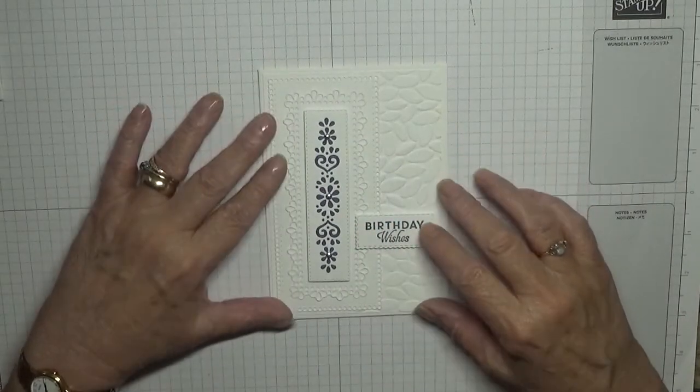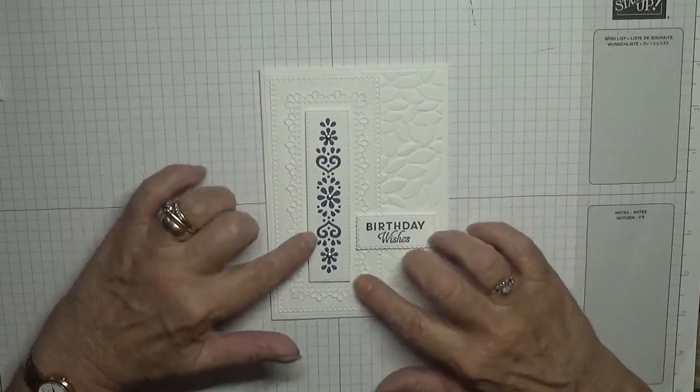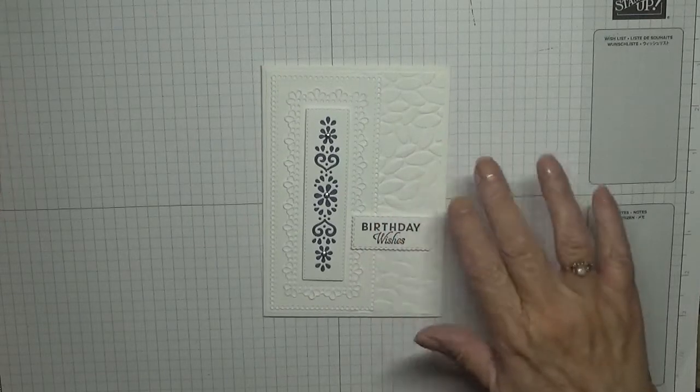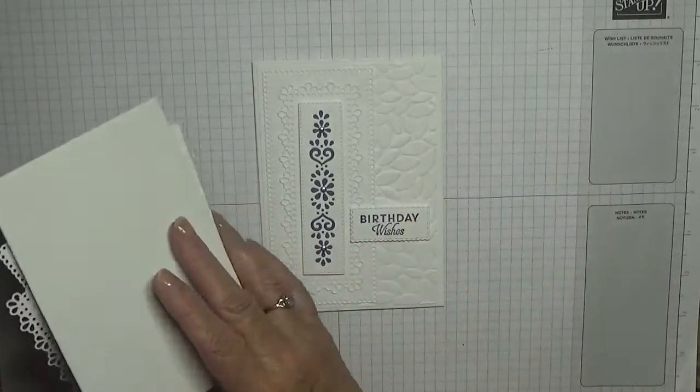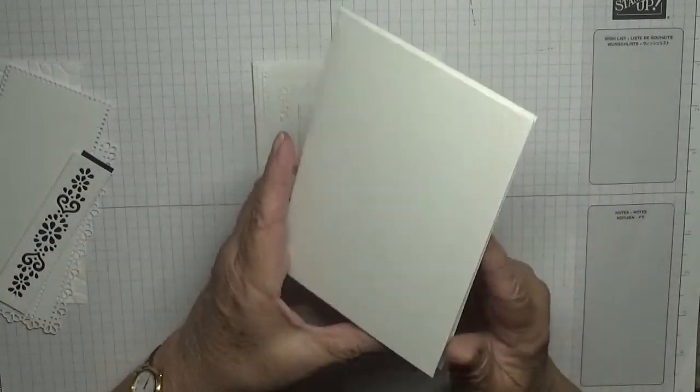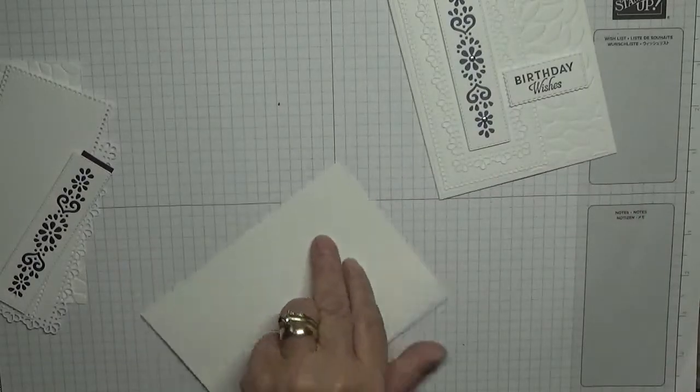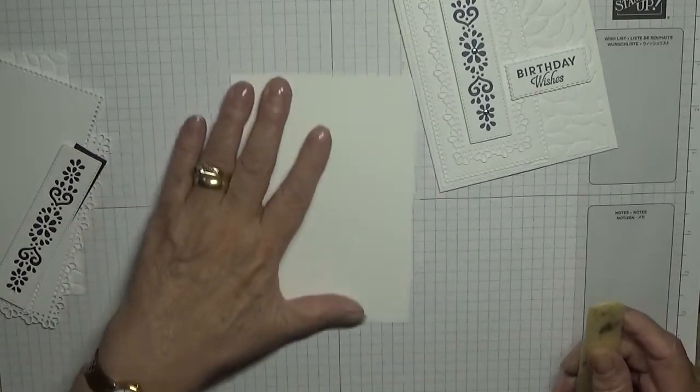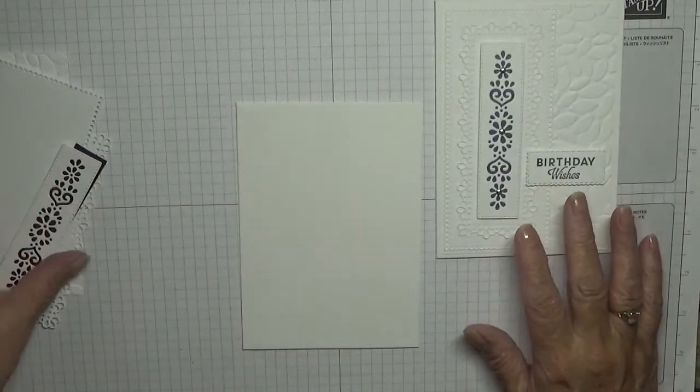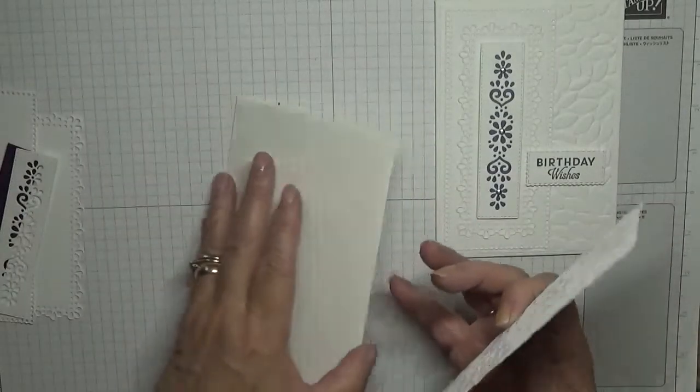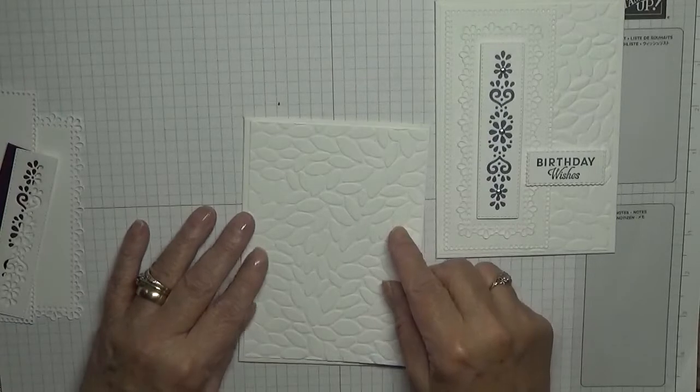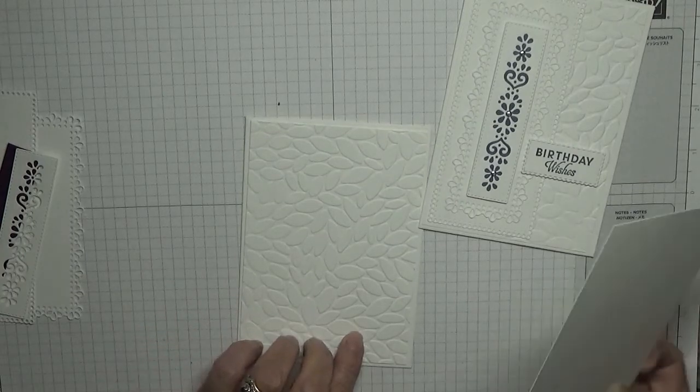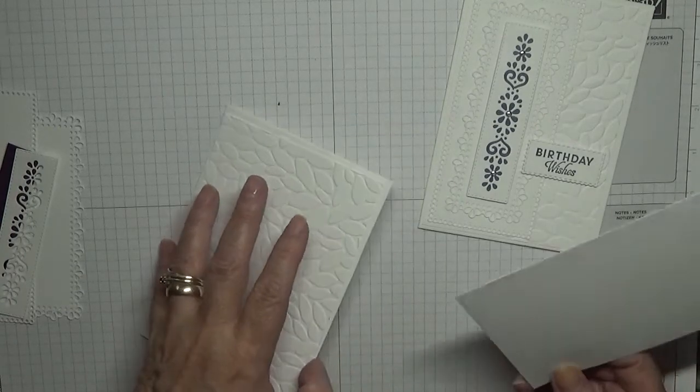These are the ornate layering dies that I've used and an old Stampin' Up embossing folder. I've got everything ready, so I've got a card base of eight and a quarter by five and seven eighths scored at four and one eighth and burnished. I have a white card by five and five eighths by three and seven eighths which I've already embossed, and I've got one for the inside same size.